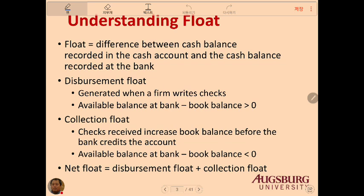There is a concept called float. Float is the difference between the cash balance recorded in the cash account and the cash balance recorded at the bank. Disbursement float occurs when a firm writes a check — it is the available balance at the bank minus the book balance. It should be positive because the bank's available balance is usually higher since they don't know you've written a check yet.